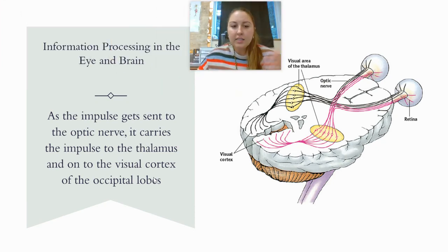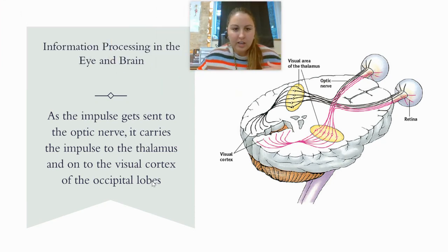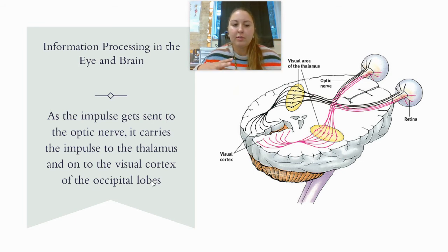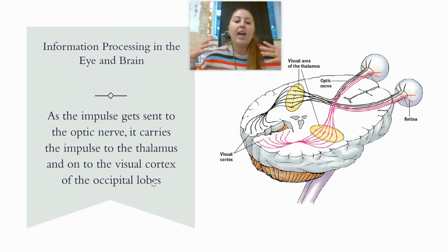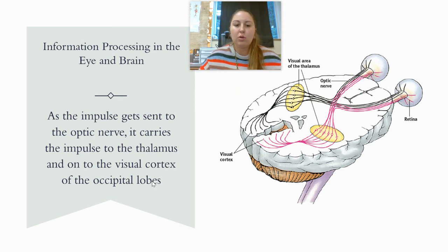As the impulse gets sent to the optic nerve, it carries the impulse to the thalamus, which then directs the information to the visual cortex of the occipital lobes.